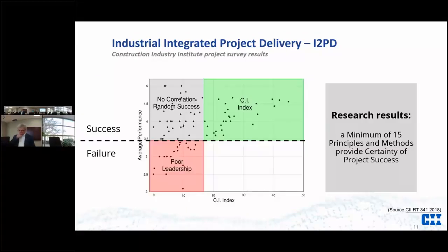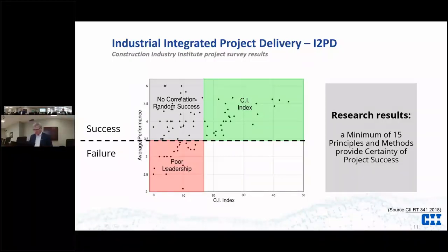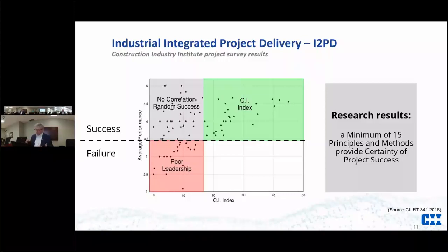Another way to look at the same data: when you're below a certain level — below 15 on the CI index — you see random success or failure. For the successful projects in that range, we couldn't find a reason they were successful. There was a slight correlation with poor leadership and project failure. The good news: what we found in the research is that a minimum of 15 of the principles and methods used at the right intensity level puts you up in that green CI zone. That was the core of the research.